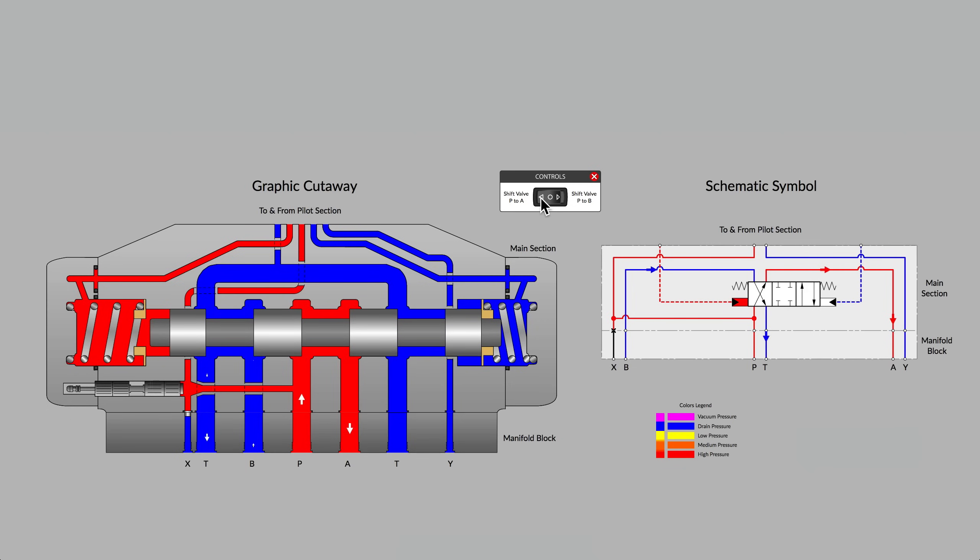Right now, we can see that the main spool has moved to the right, and that's giving us P to A flow to possibly extend a very large hydraulic cylinder or possibly to turn a hydraulic motor clockwise.